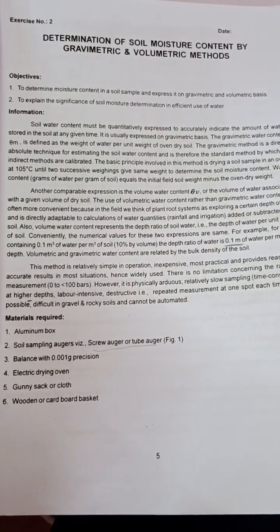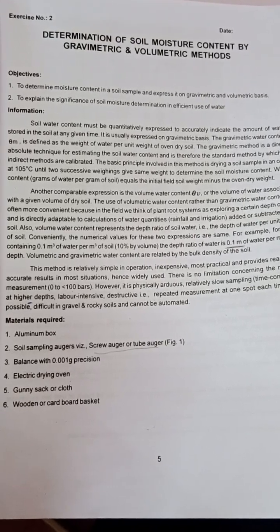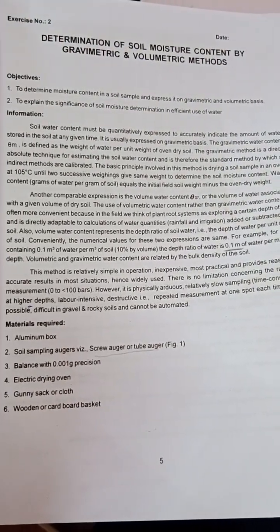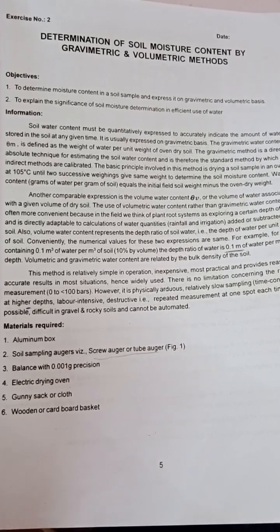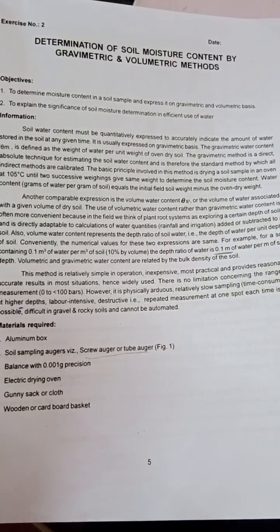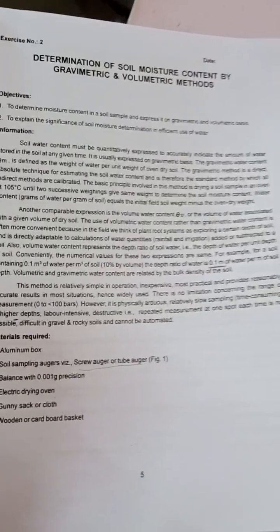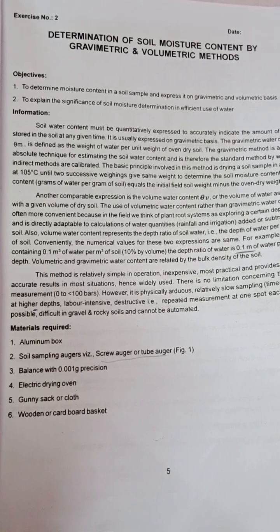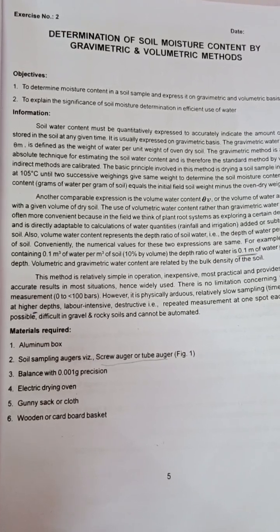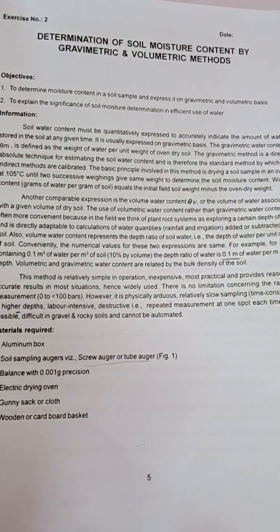The usage of volumetric water content rather than gravimetric water content is often more convenient because in the field we think of plant root systems exploring a certain depth of soil. Volumetric water content also represents the depth ratio of soil water, making calculations of water quantities based on rainfall and irrigation convenient. For example, a soil containing 0.1 cubic meters of water per cubic meter of soil is 10% by volume, or 0.1 meters of water per meter of soil depth.